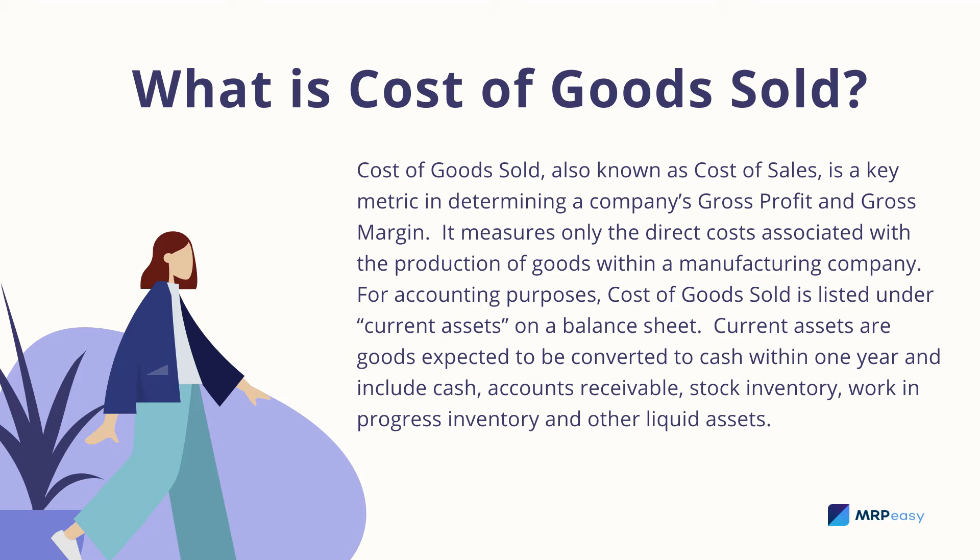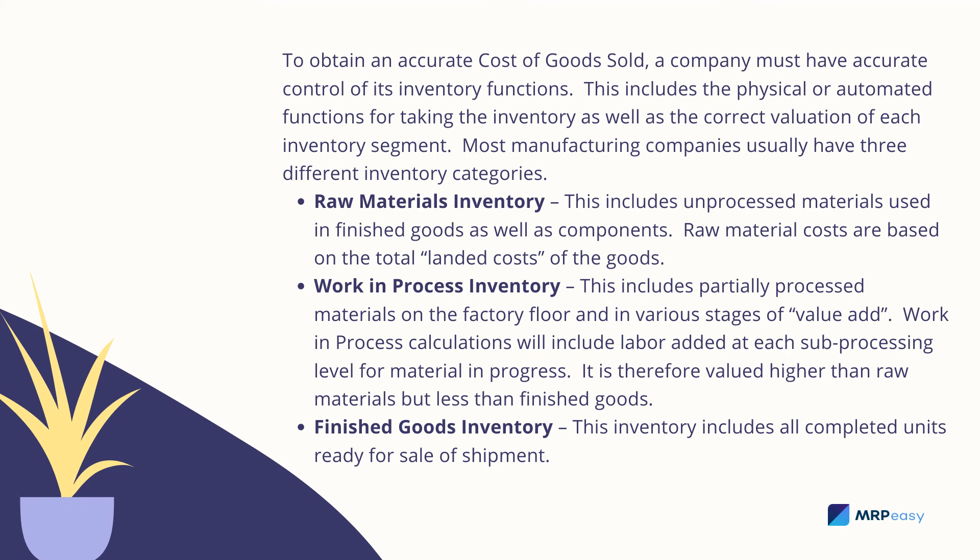Current assets are goods expected to be converted to cash within one year and include cash, accounts receivable, stock inventory, work-in-progress inventory, and other liquid assets. To obtain an accurate Cost of Goods Sold, a company must have accurate control of its inventory functions. This includes the physical or automated functions for taking the inventory, as well as the correct valuation of each inventory segment.